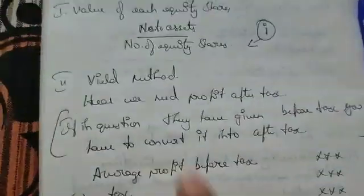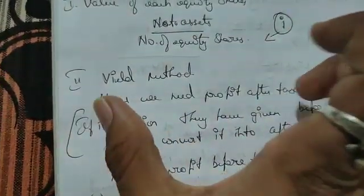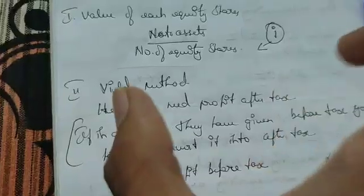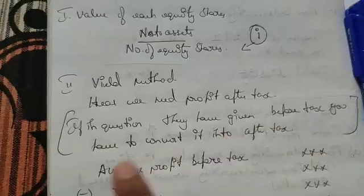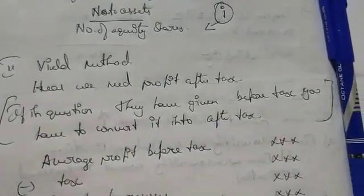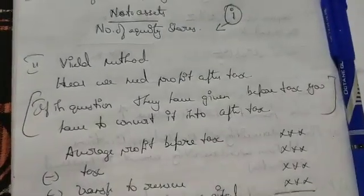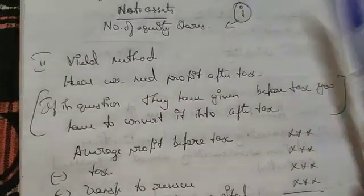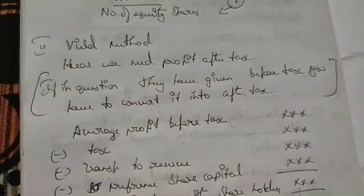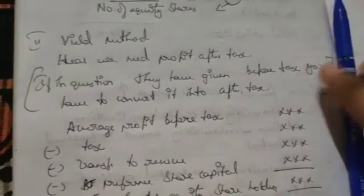Next, in yield method, we need profit after tax actually. If in the question they have given before tax, you have to convert it into after tax by using average profit after tax. Take all the profits of the year and add them. How you will calculate for the goodwill? All the profits divided by how many years - five, so divided by five.